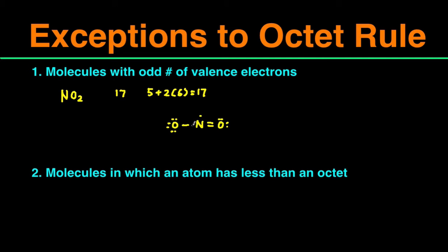But the nitrogen in the middle only has seven valence electrons. If you have an odd number of valence electrons, there's no way that every single atom in the molecule is going to have an even number or octet.